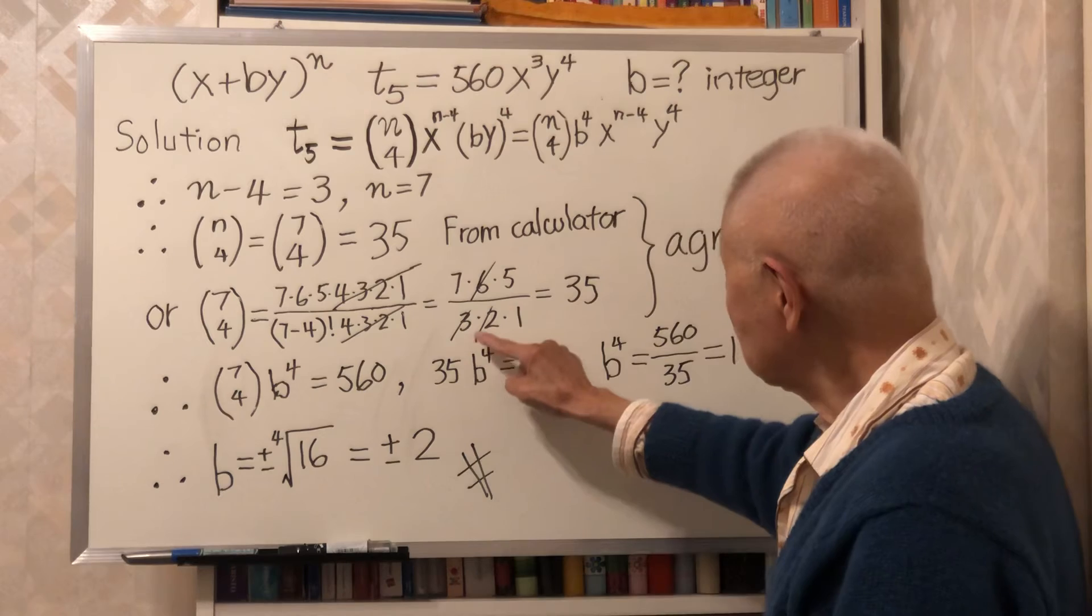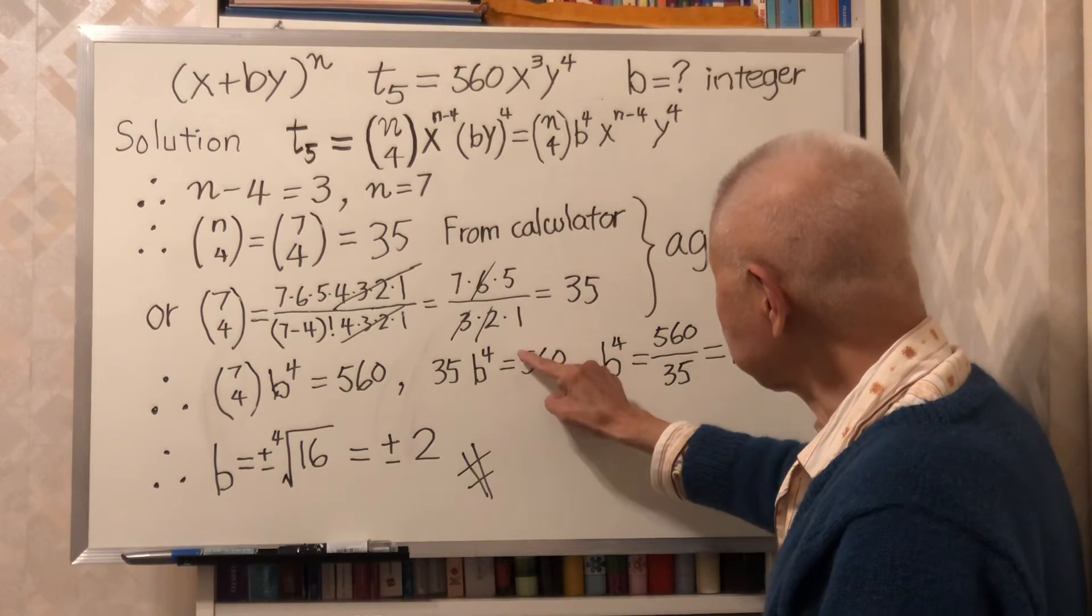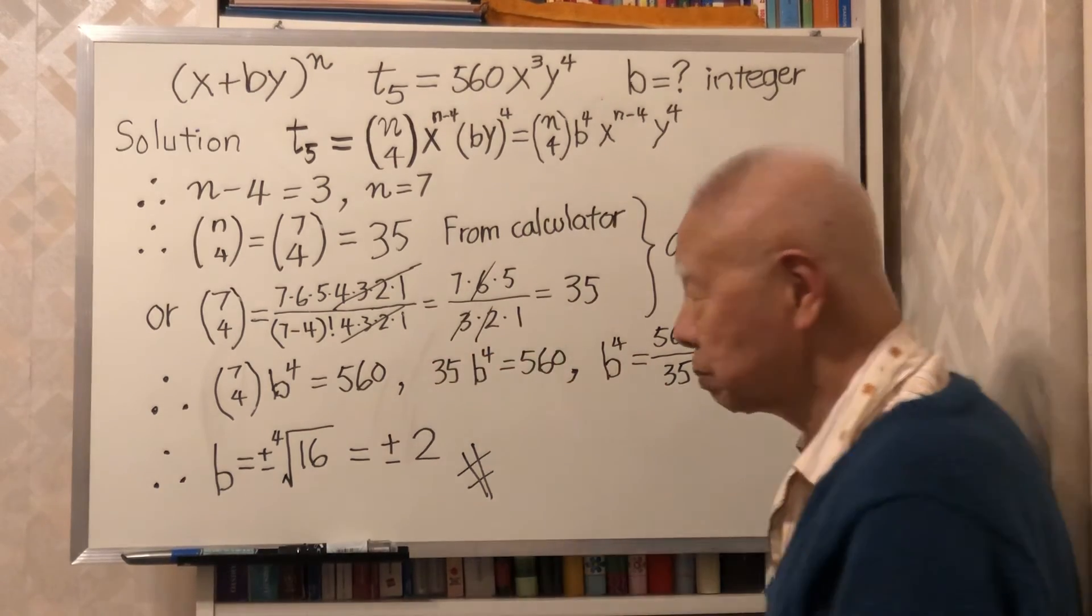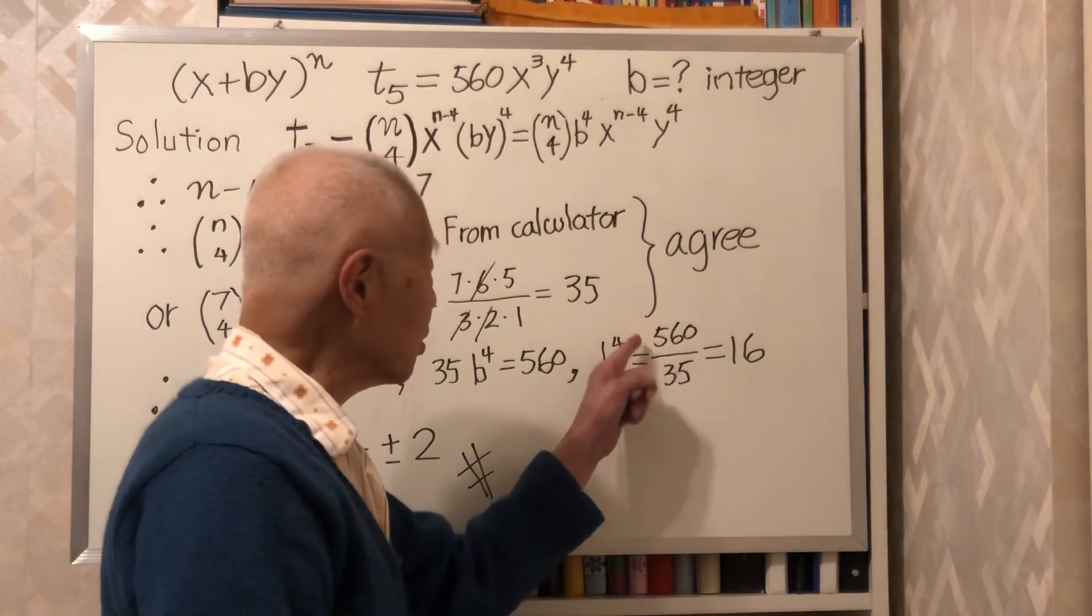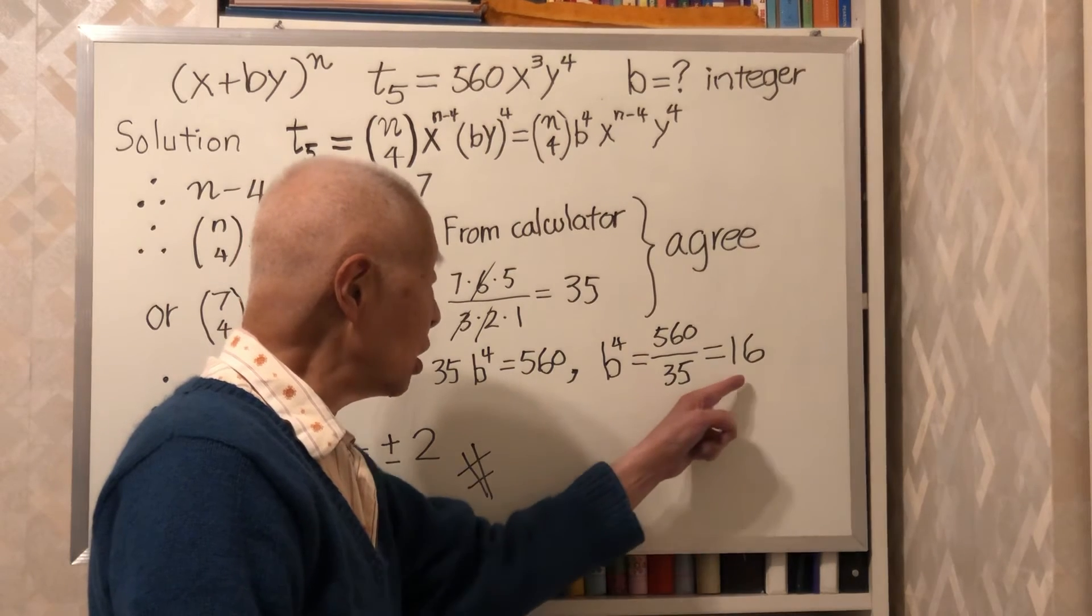Then B to the exponent 4 is 560 divided by 35. 560 divided by 35 is 16.